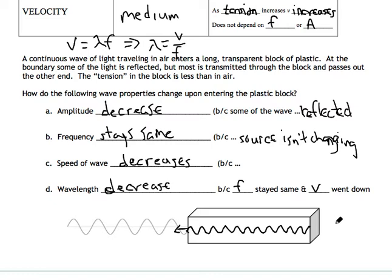The question is, what's going to happen when we go back out? You can ask the same questions. There will be some reflection again, so our amplitude will go down a little bit more. Our frequency is still the same. Speed, well, we're going back in air, so that's going to go up. Therefore, our wavelength is going to increase.